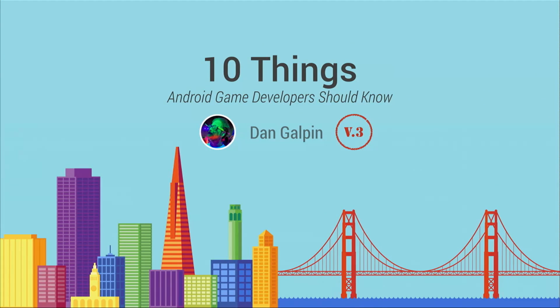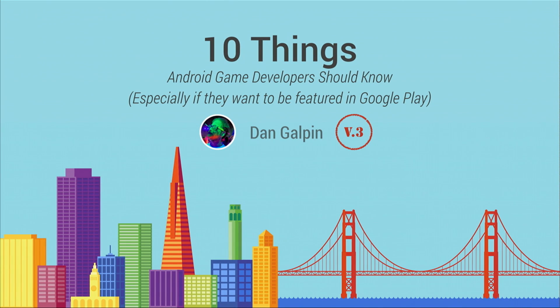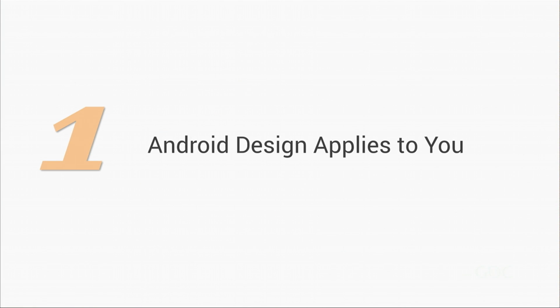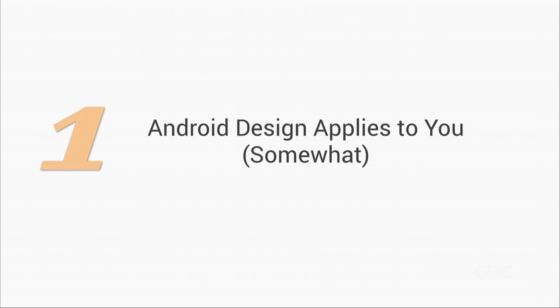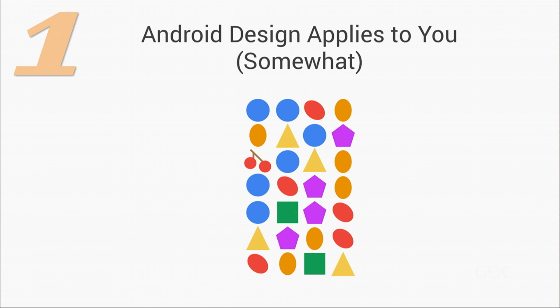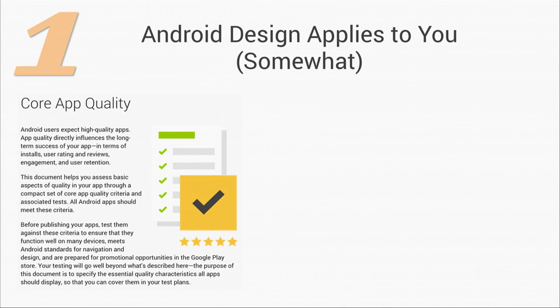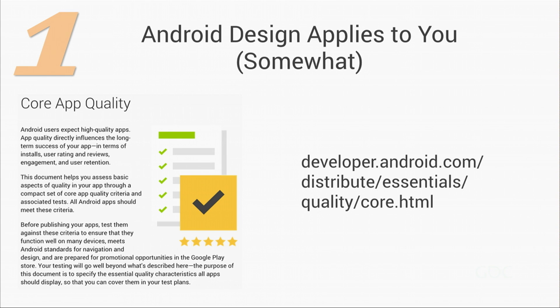10 Things Again. Developers — this is the third time I've done this talk at GDC, especially for those who want to get featured. So let's start with number one: Android design applies to you, or at least consider it, mostly. What that means is you don't have to use flat sprites, but you should take a look at the core app quality guidelines on developer.android.com.